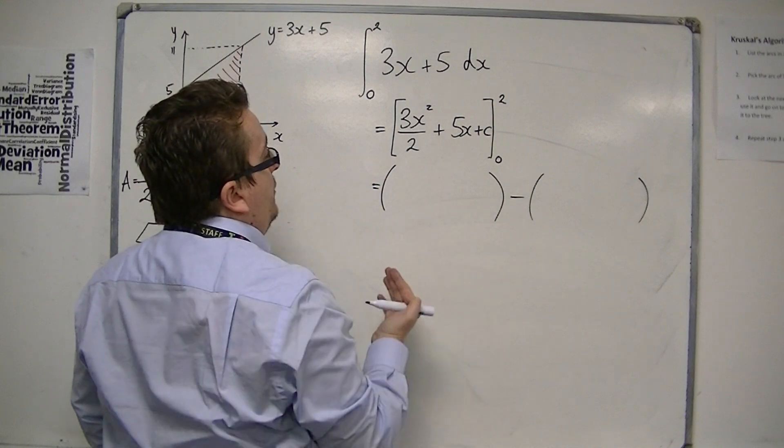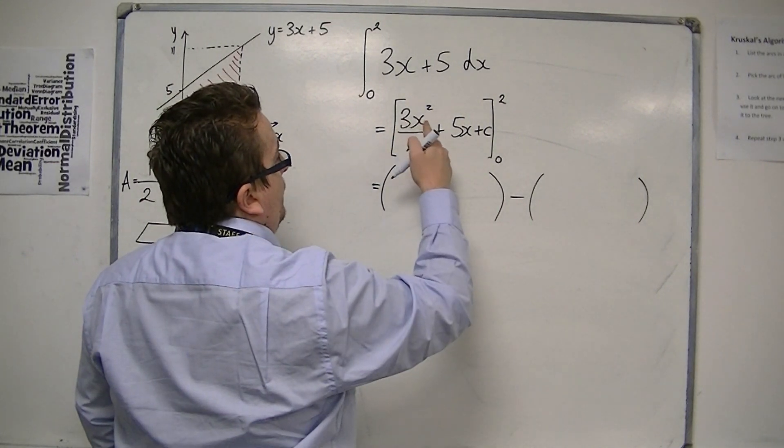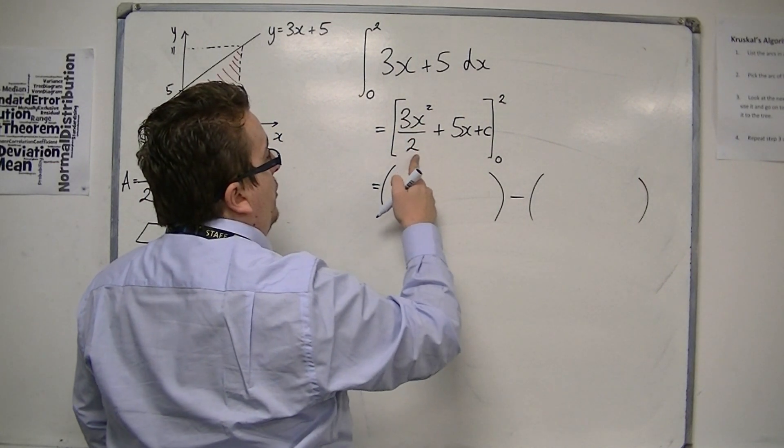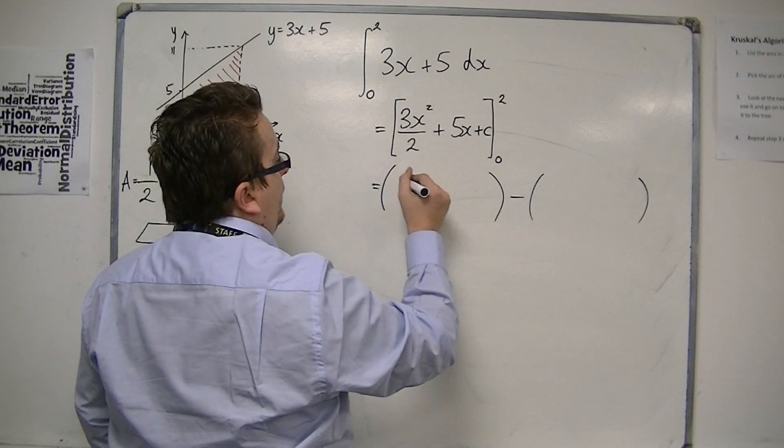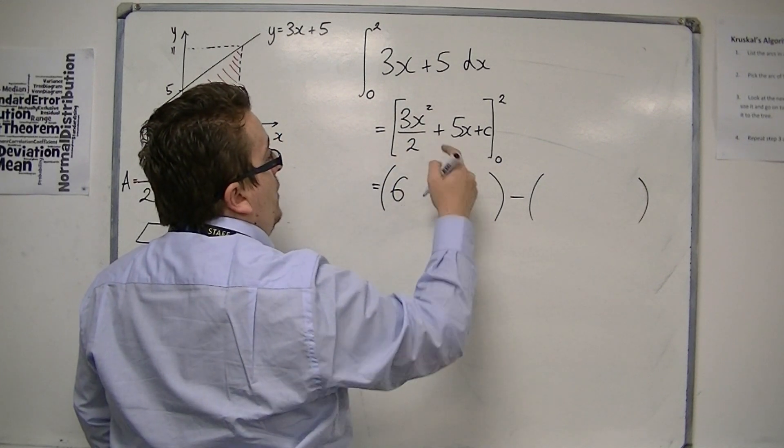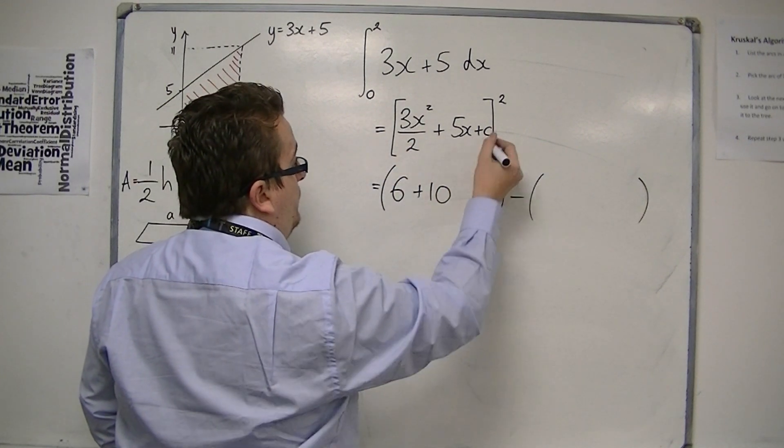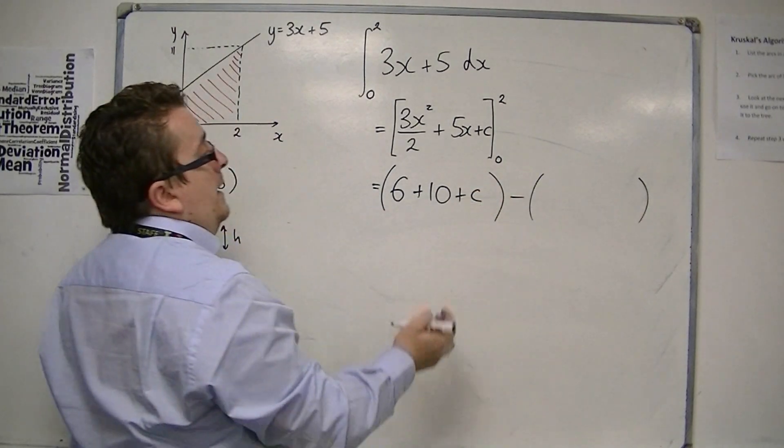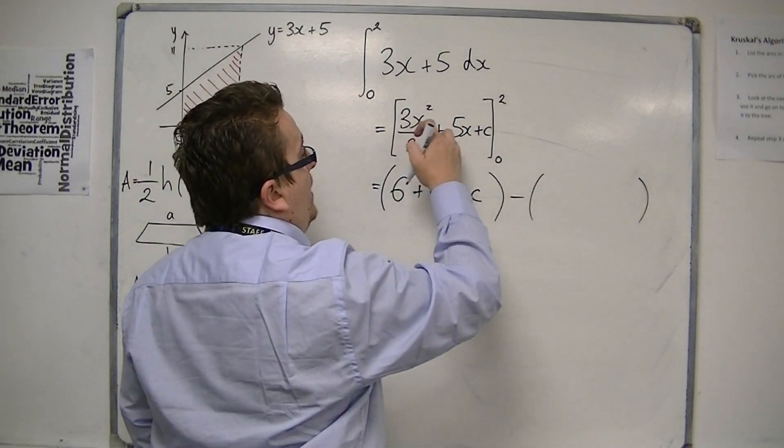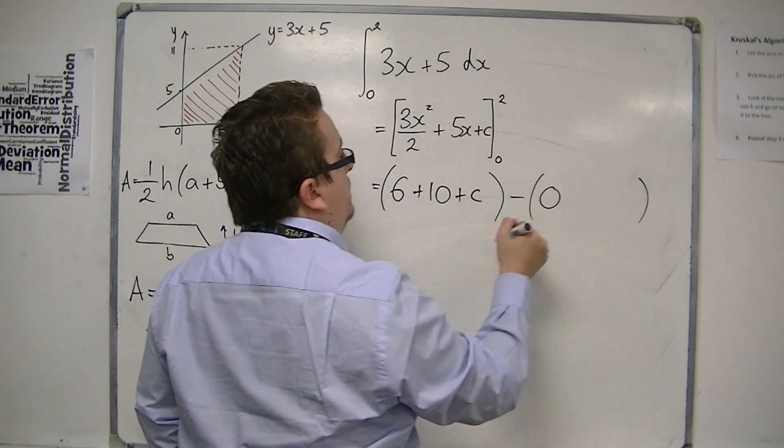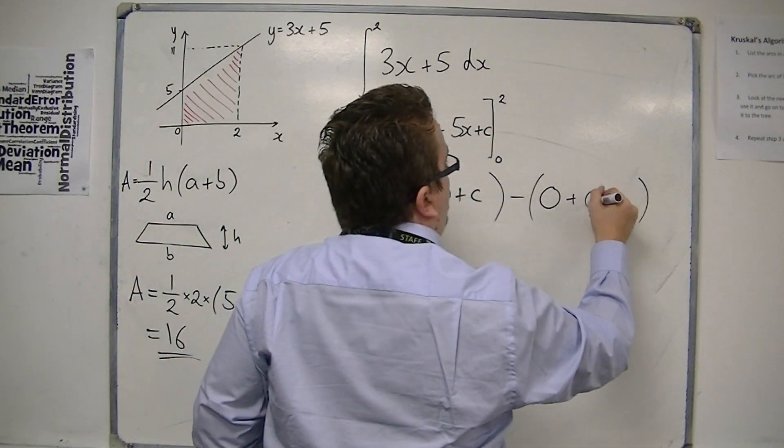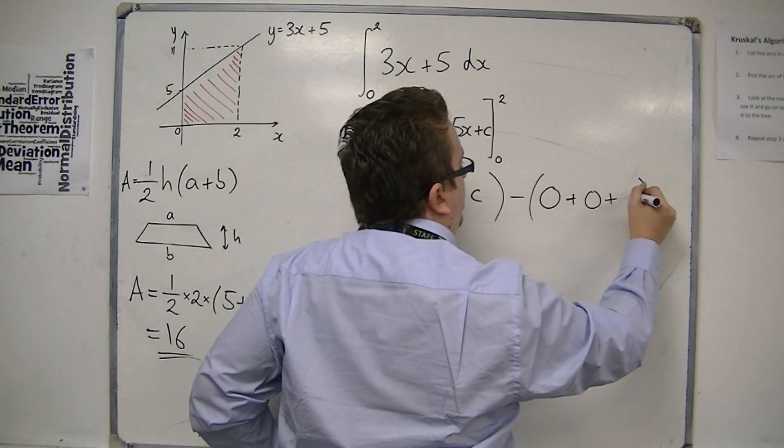So we substitute in 2. We get 3 lots of 2 squared divided by 2, so that's 12 over 2 is 6, plus 5 lots of 2 is 10, plus c. And then we substitute in the 0. So we get 3 lots of 0 squared over 2 is 0, plus 5 lots of 0 is 0, and then we get a plus c.